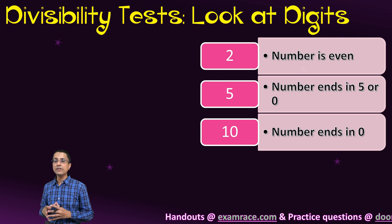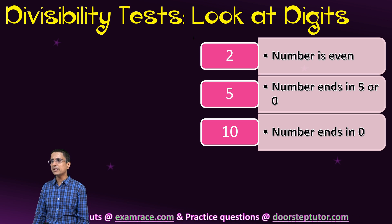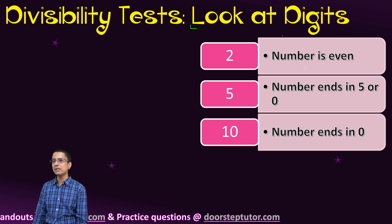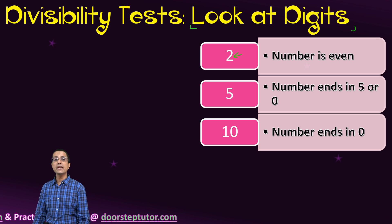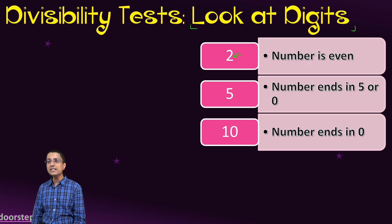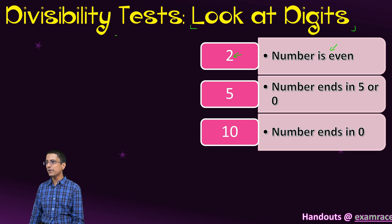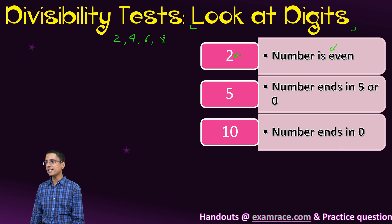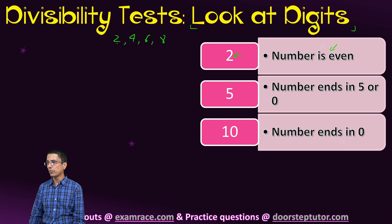Here are the first kinds of divisibility tests. We can find out if a number is divisible by 2 just by looking at the last digit. A number is divisible by 2 only if the number is even. Numbers like 2, 4, 6, 8 are even numbers and those numbers are divisible by 2.